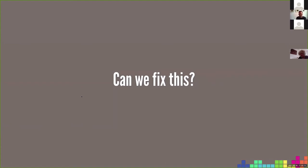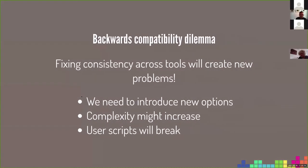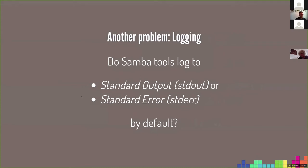Fixing consistency across tools will create new problems. We need to introduce new options, the complexity might increase, and user scripts are likely to break — so we have a backwards compatibility dilemma. Another problem is logging: do Samba tools log to stdout or stderr by default? Do all tools log to the same output? And if we change the logging destination, we'll probably break user scripts that parse the output.